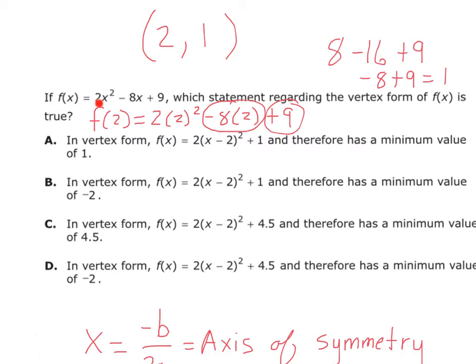What is the leading coefficient — is that a positive 2 or a negative 2? Positive. And since it's positive, we know our parabola opens upward, not downward. So our vertex is right here where the parabola changes direction — that is a minimum, not a maximum.